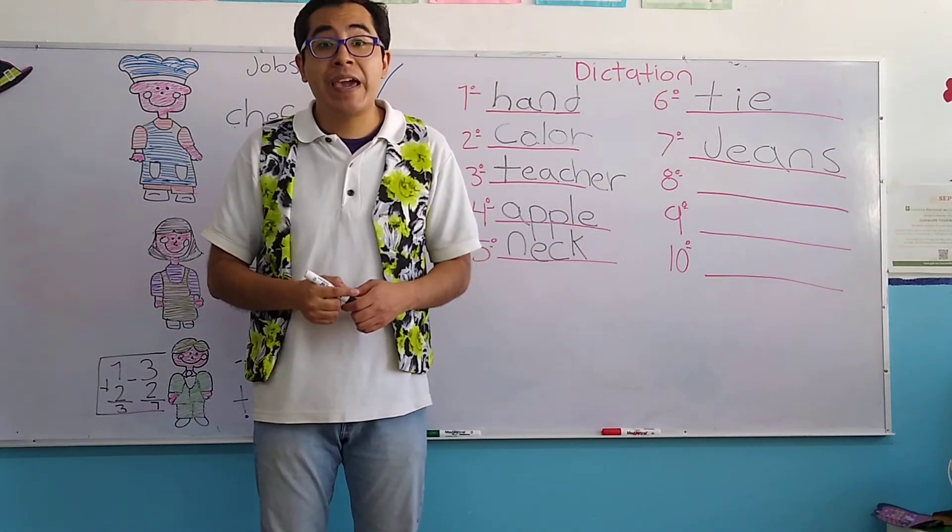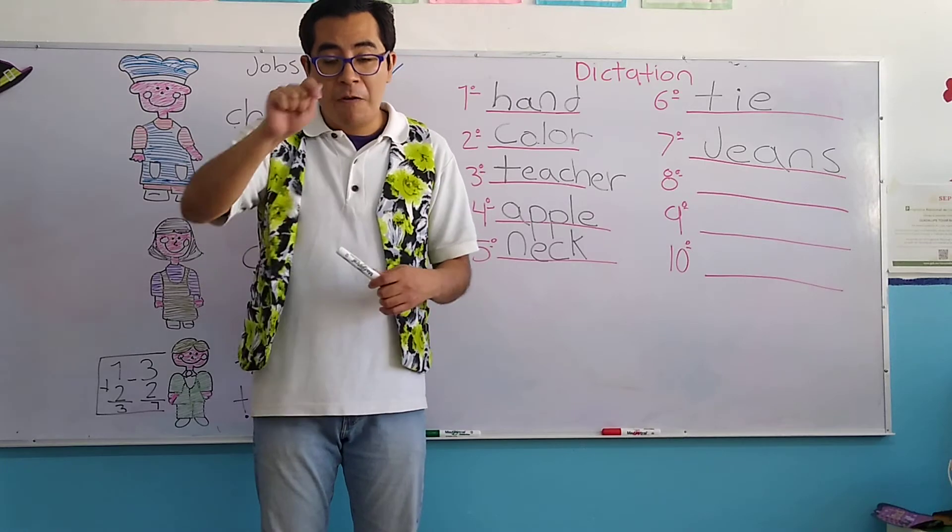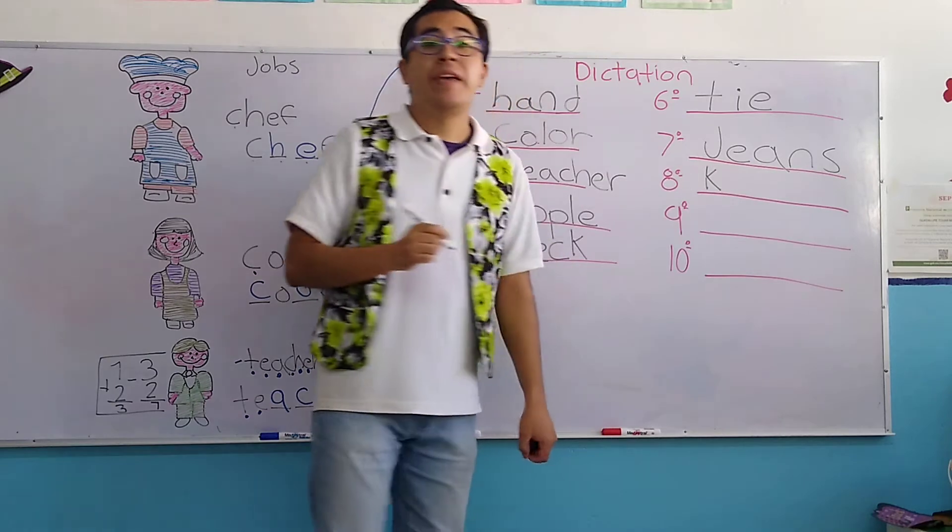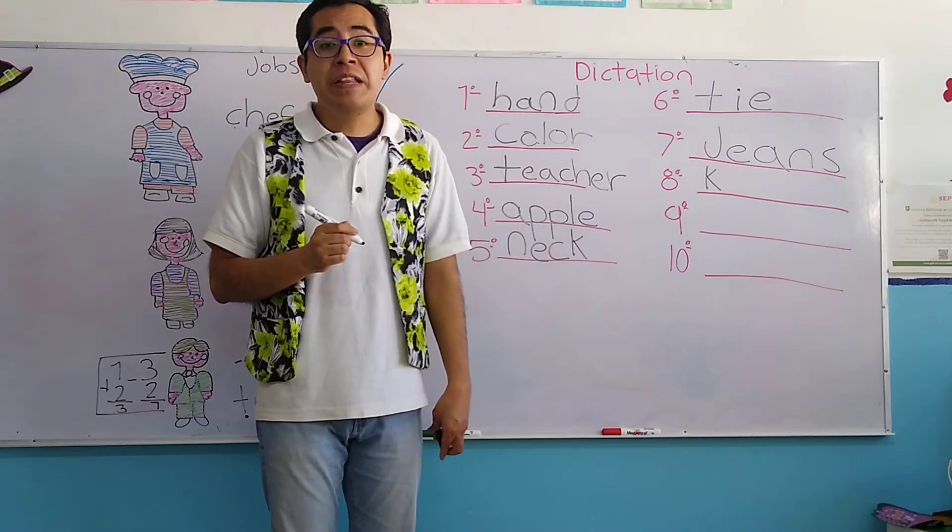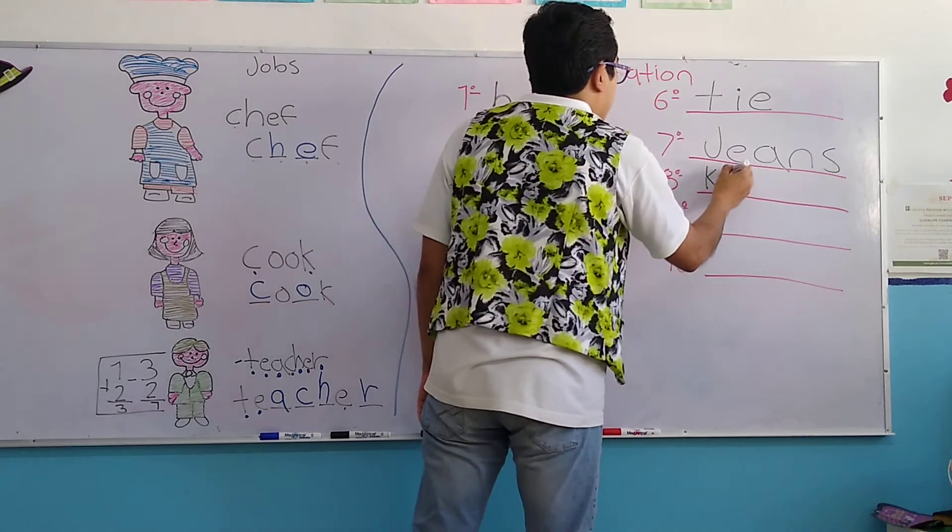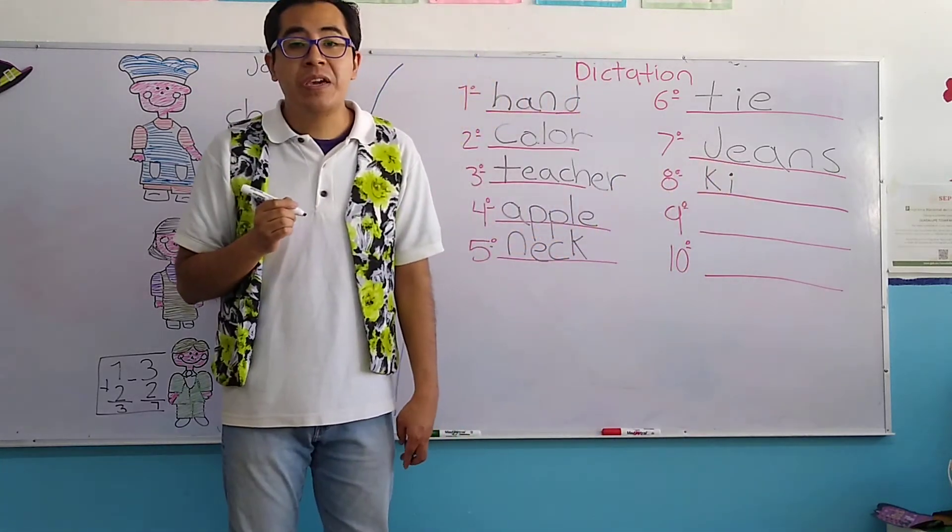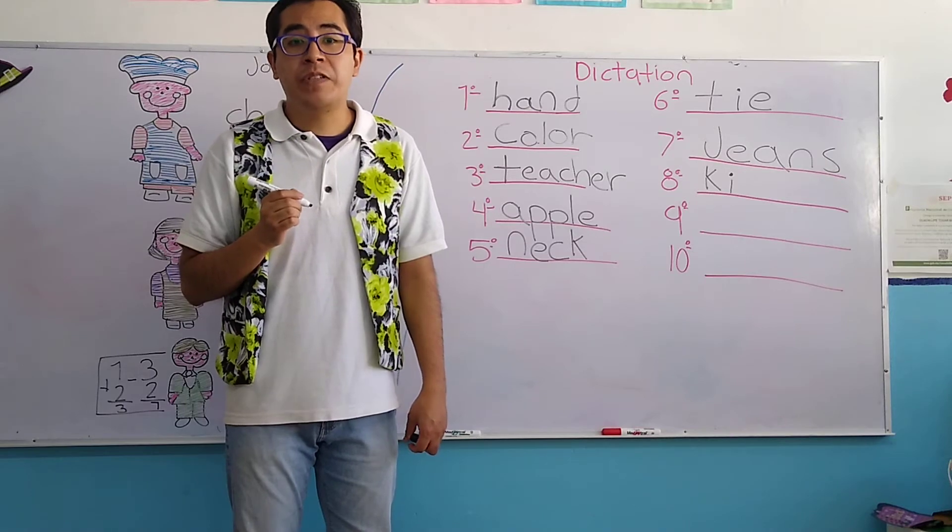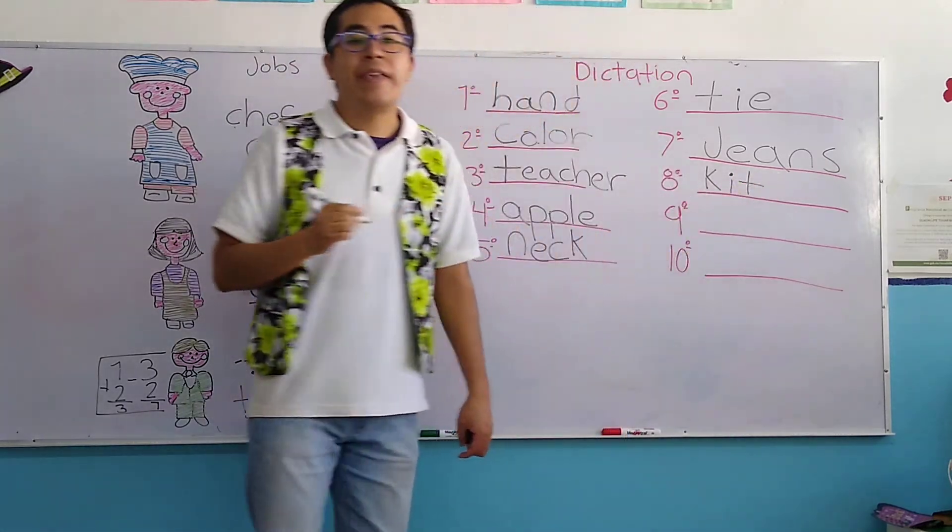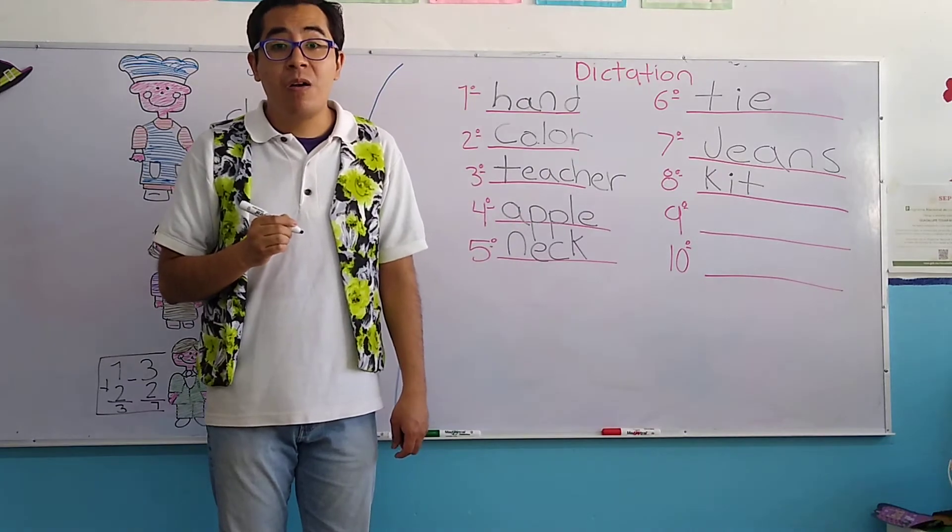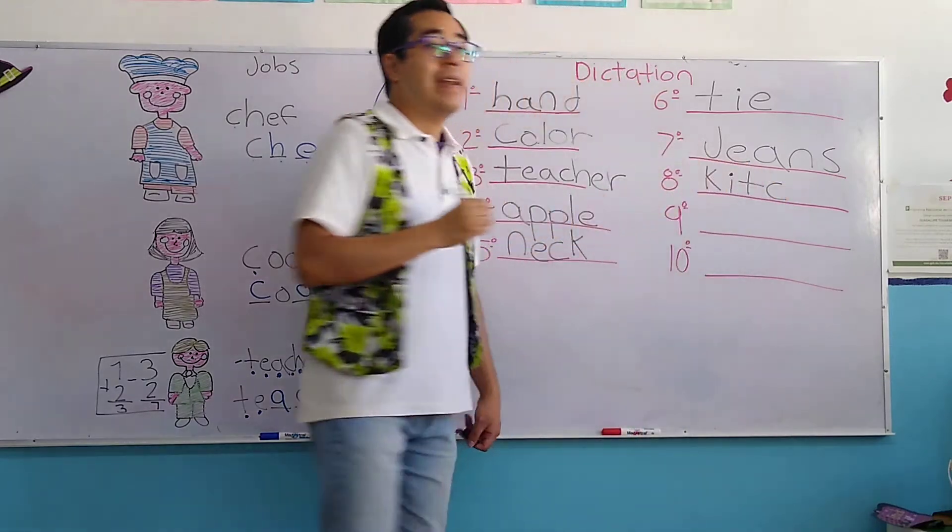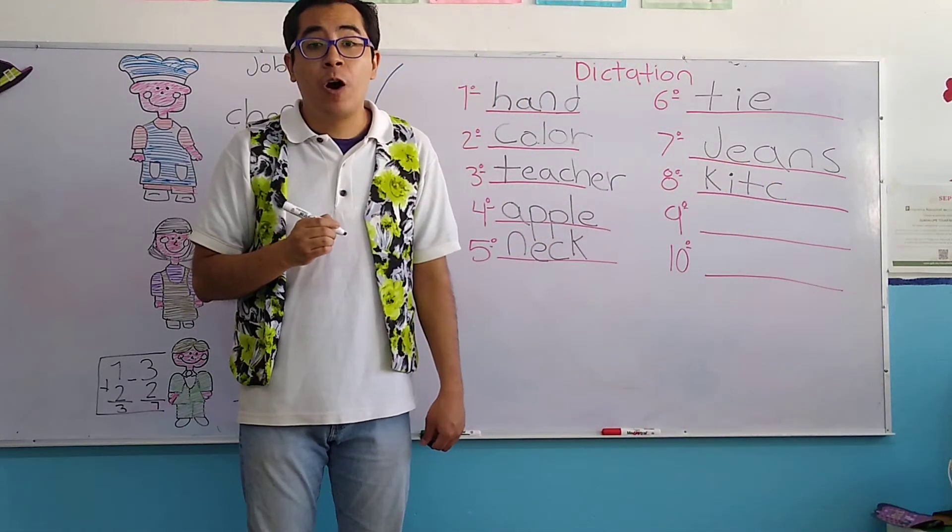We start with the letter K of Carla of Key. Letter I of Indian of Irma. Letter T of Train of Tito. Letter C of Carlos of Car. Letter H of Hot Dog.